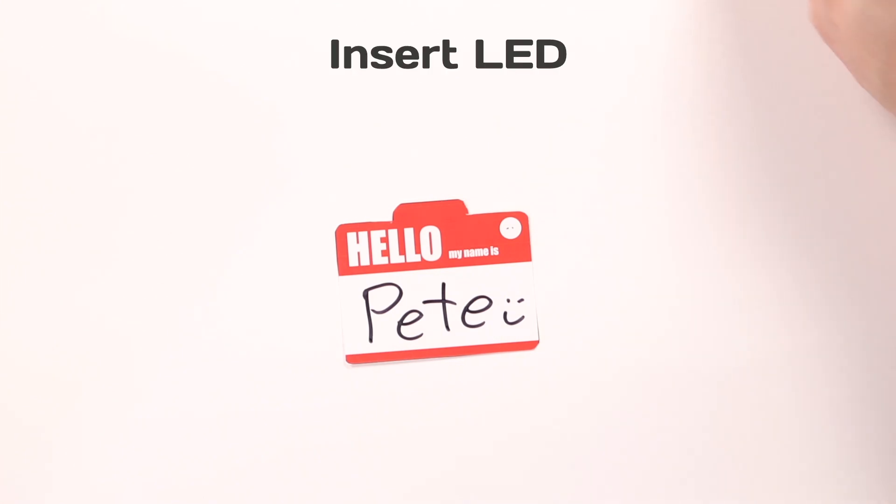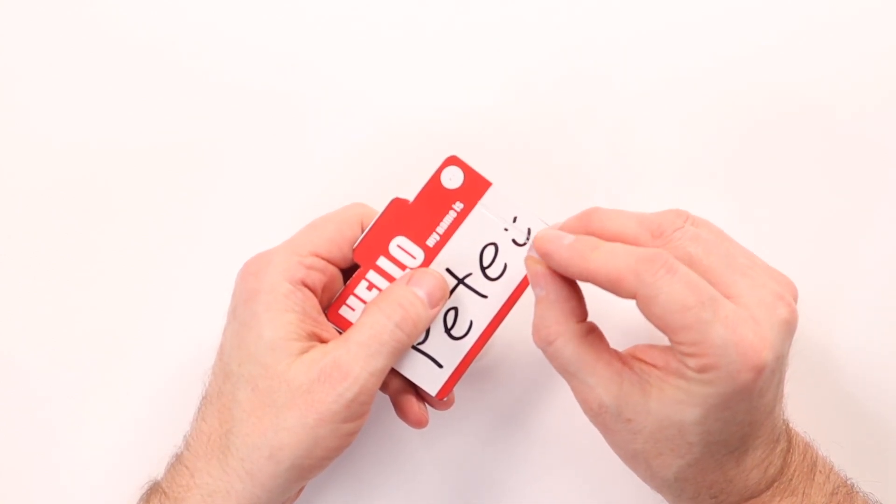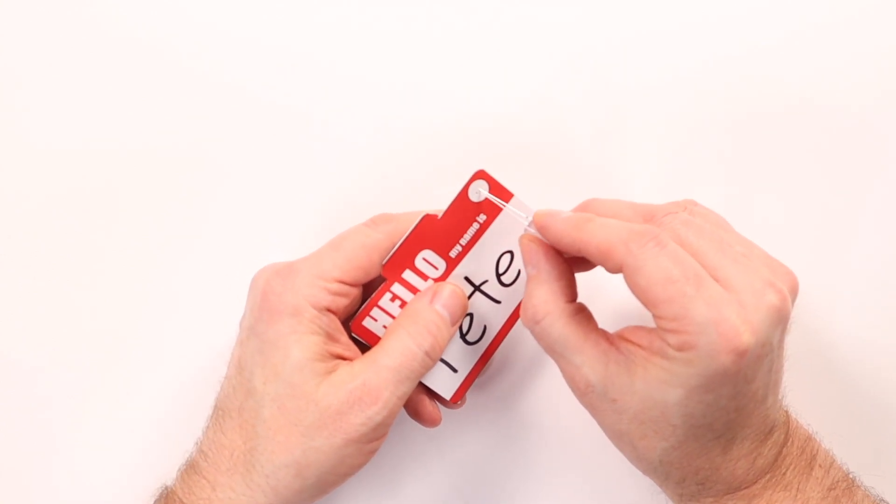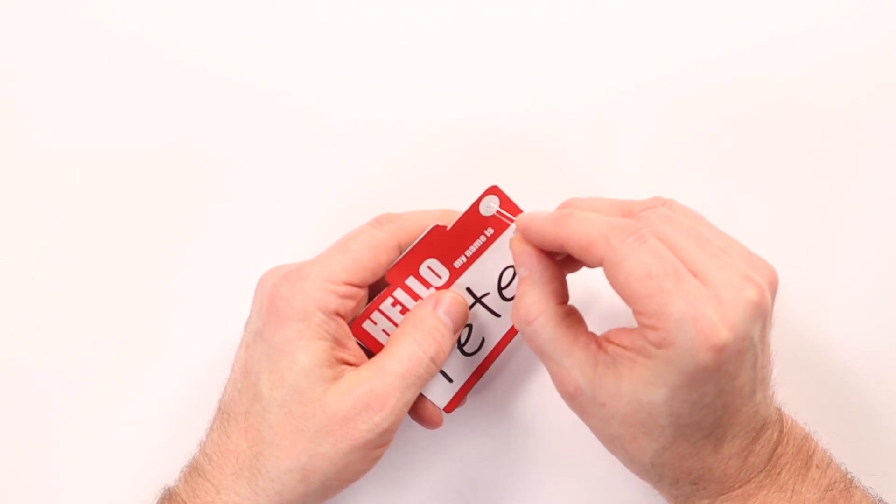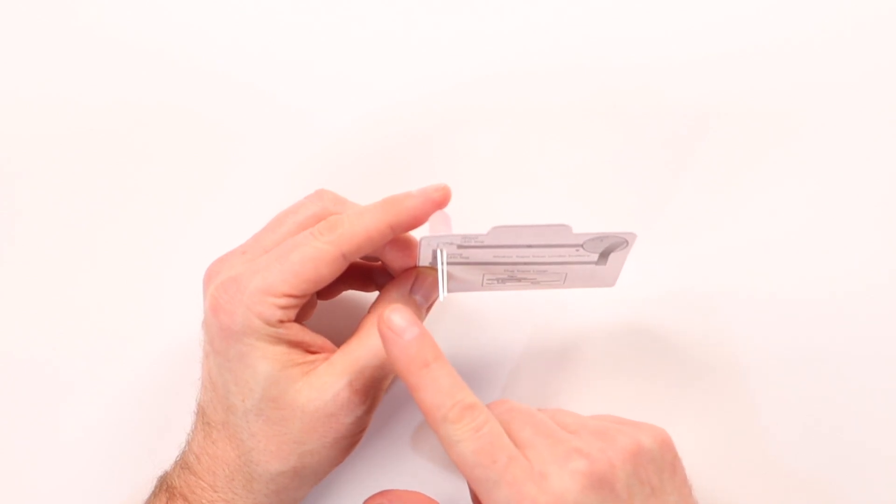Now we're going to insert our LED. You'll want to make sure the longer leg is on the outside of the badge. You'll see that the longer leg is on the outside of the badge.